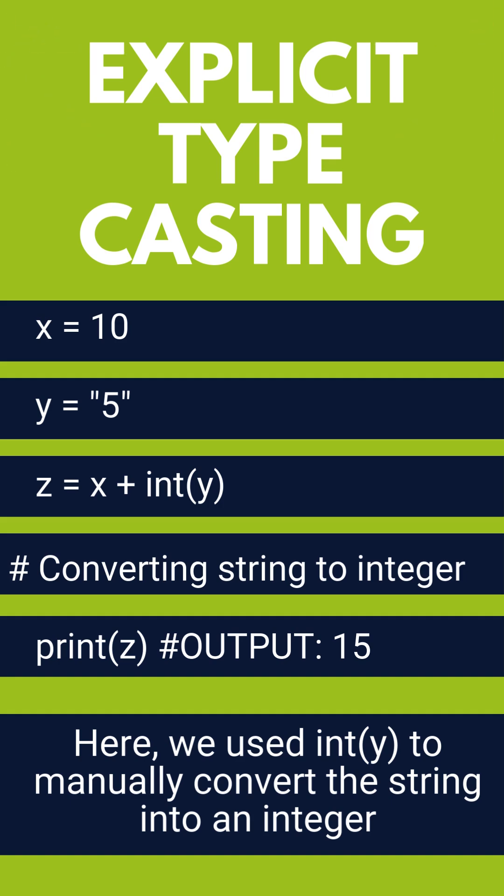And as a result, the output is 15. So when we manually convert one data type into another data type, that is known as explicit typecasting.